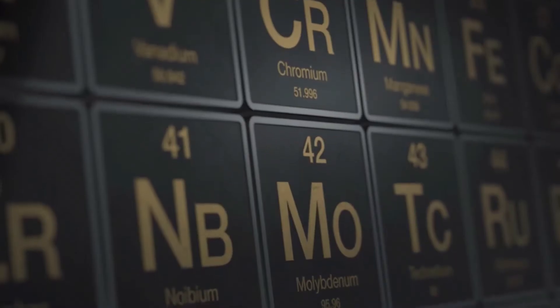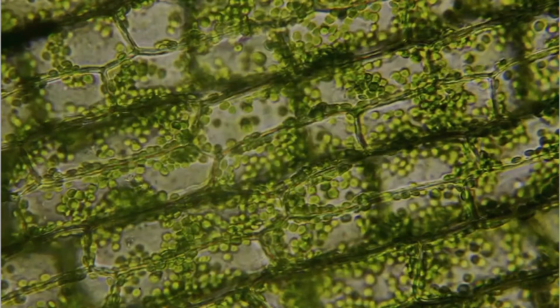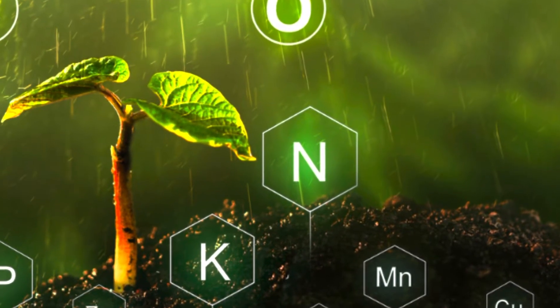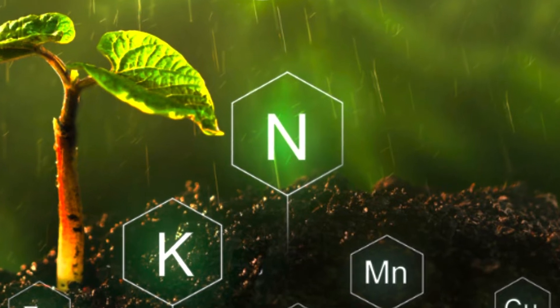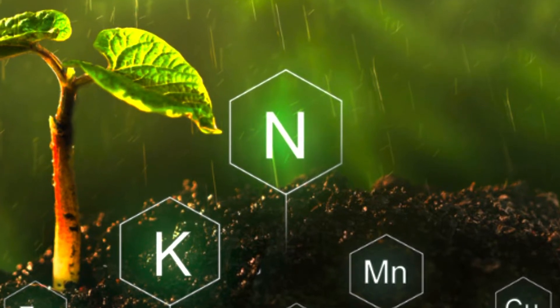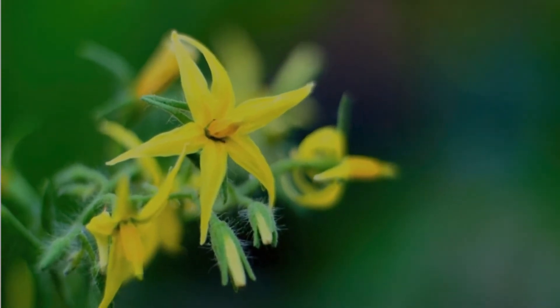Nitrogen is very important — it is the most important element on the periodic table that tomato plants need, and it's also responsible for chlorophyll production. But there is also a known thing as nitrogen toxicity. Nitrogen toxicity occurs when your tomato plant takes up way too much nitrogen, and this specifically occurs when your tomato plant is getting ready to go into its next stage, which we would call the flowering stage.